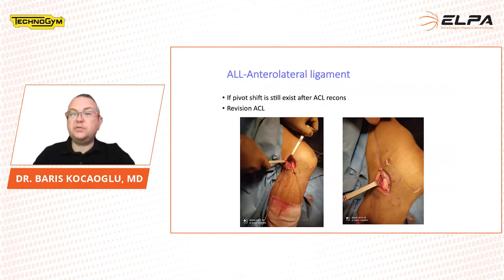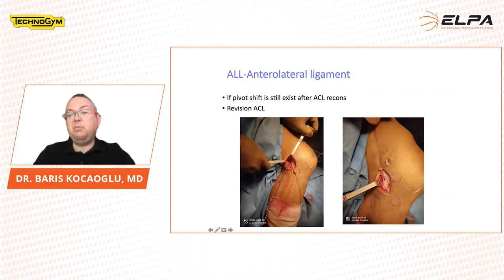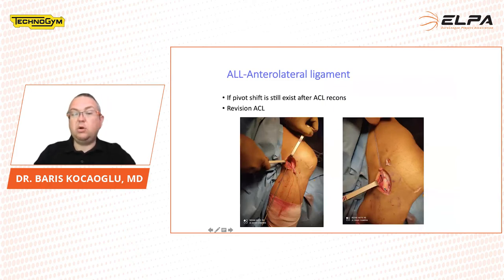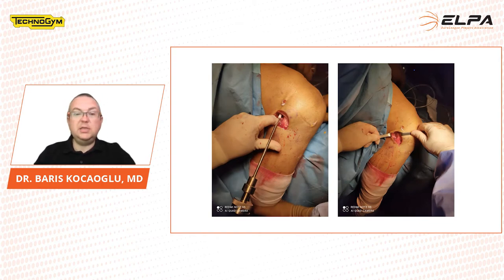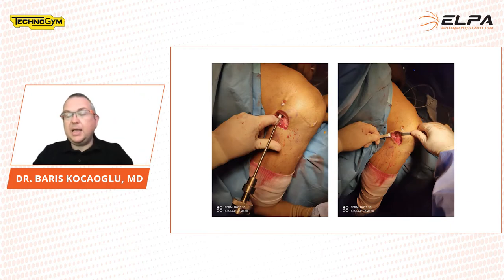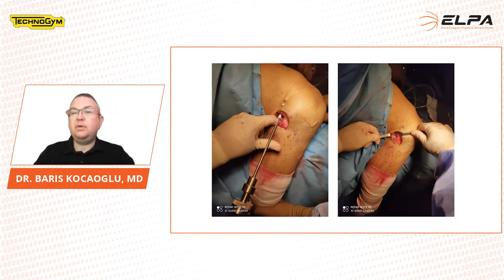We planned to make an ALL reconstruction. ALL reconstruction is very easy with the modified Lemaire technique. We use iliotibial band as a graft, pass it under the lateral collateral ligament, and fix it at its footprint at the femur. It is better to fix the anterolateral ligament at 19 degrees of traction to get rid of rotational instability. ACL surgery recovers anterior translation, while ALL surgery recovers rotational instability.